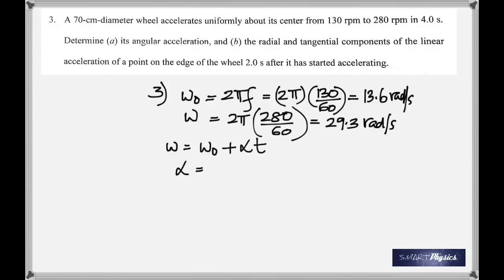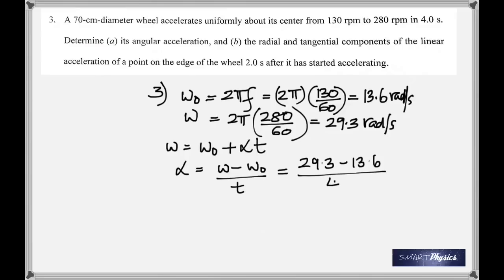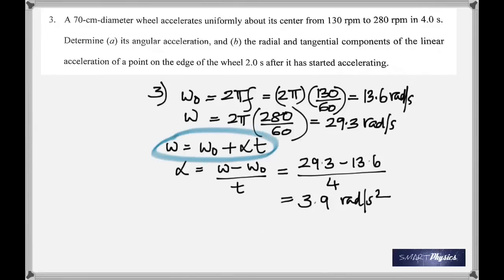Rearranging, angular acceleration alpha = (ω − ω₀) / t. So that's (29.3 − 13.6) / 4, giving 3.9 radians per second squared.